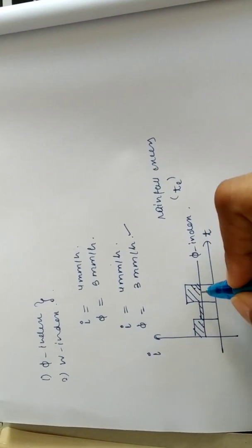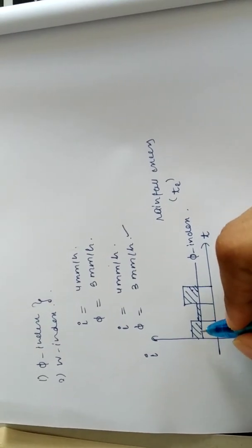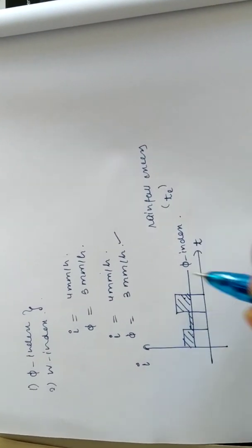Can I say that the area above this phi index in a hydrograph that I got is runoff.